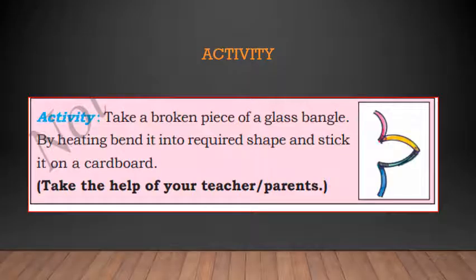There is one activity in your textbook on page 146. Take a broken piece of glass bangle, by heating bend it into required shape and stick it on cardboard. You can do this with broken bangles. If you heat it on the corner, you can stick it like plastic. Take the help of your parents if you're interested to do this activity at home.